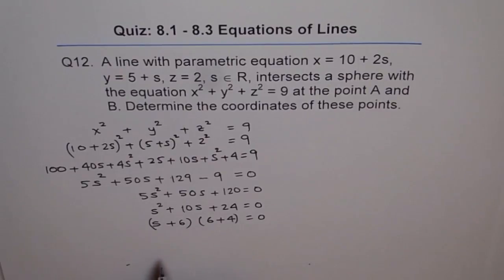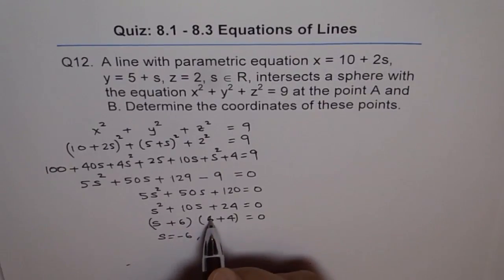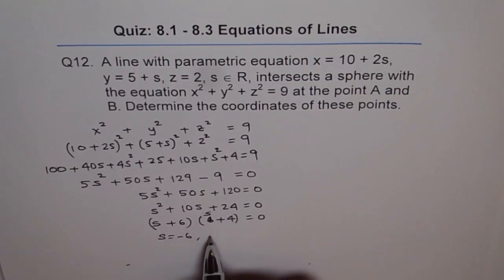And that gives us 2 solutions here. One is s equals minus 6 and the other one is s equals minus 4. Now we have 2 solutions for s. That means we have 2 points.